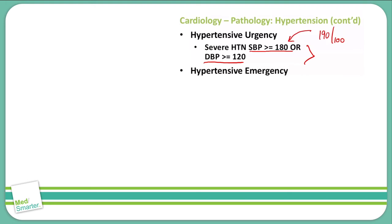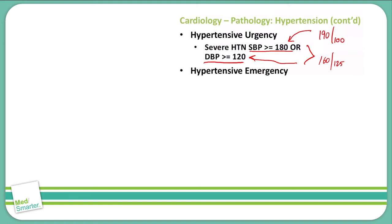Likewise, someone with a blood pressure of 160 over 125 would be considered to be in a hypertensive urgency due to that diastolic blood pressure greater than or equal to 120. We move into a hypertensive emergency when we have the same hypertension levels — greater than or equal to 180 systolic or greater than or equal to 120 diastolic — but we also add in end organ damage.